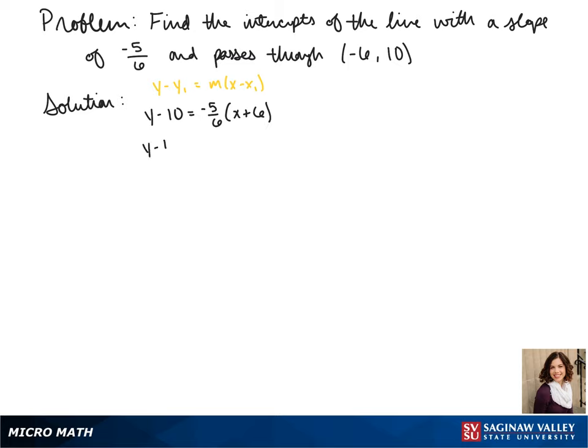We distribute our negative 5 sixths to both terms so we get y minus 10 equals negative 5 sixths x minus 5. Then we add our 10 to the other side and we get y equals negative 5 sixths x plus 5. This is our equation.